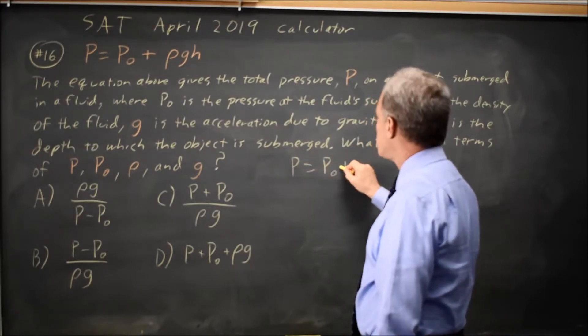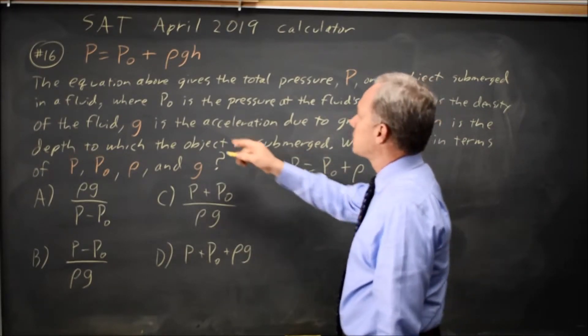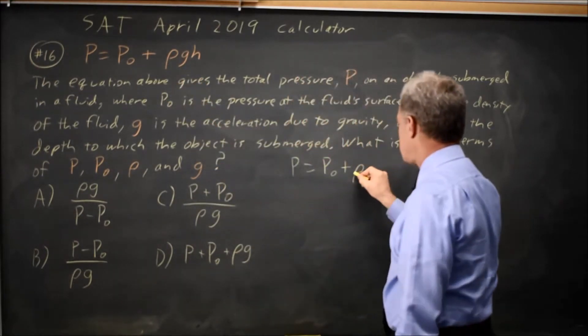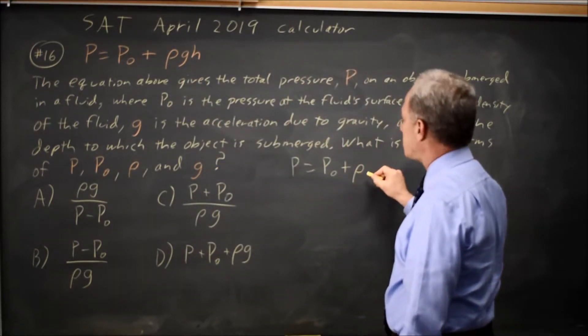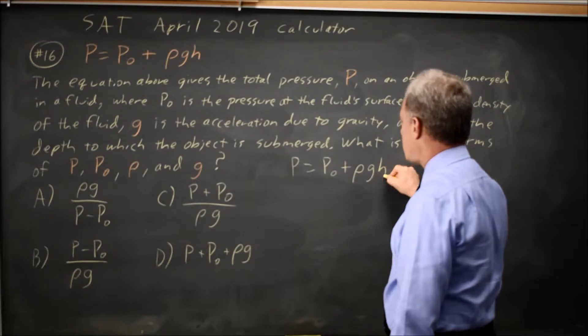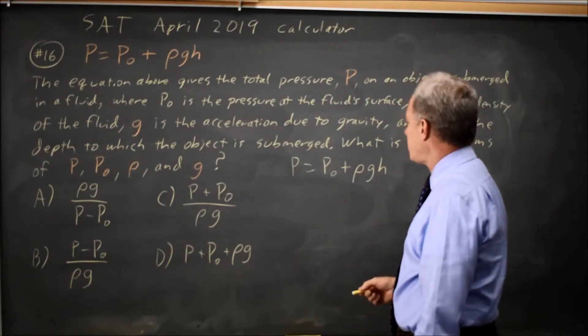P equals P0 plus, the curvy P is called rho, it's a Greek letter. So P equals P0 plus rho GH. And we're solving for H.